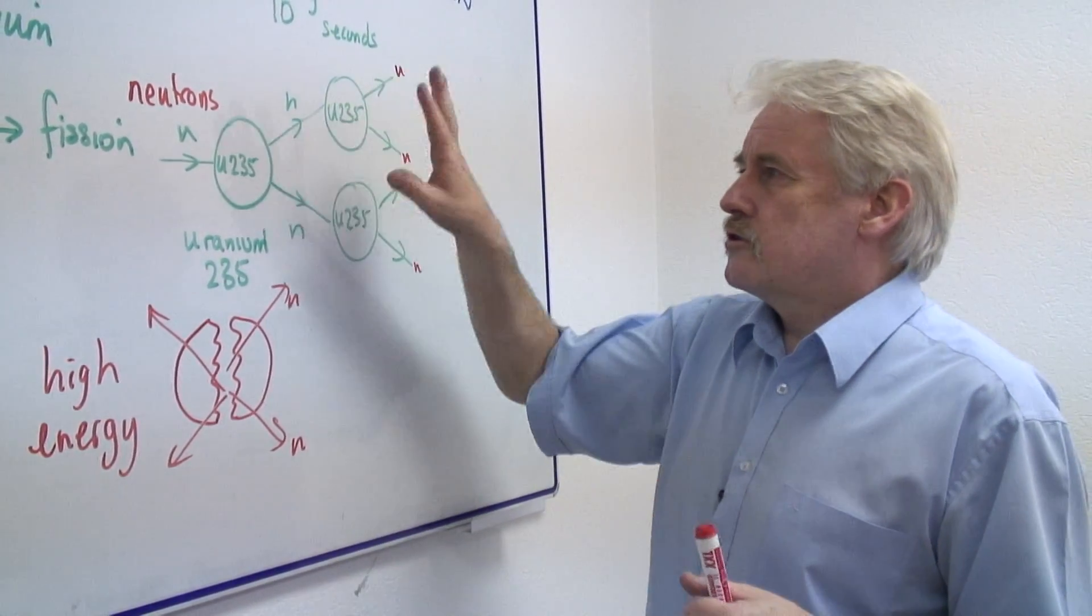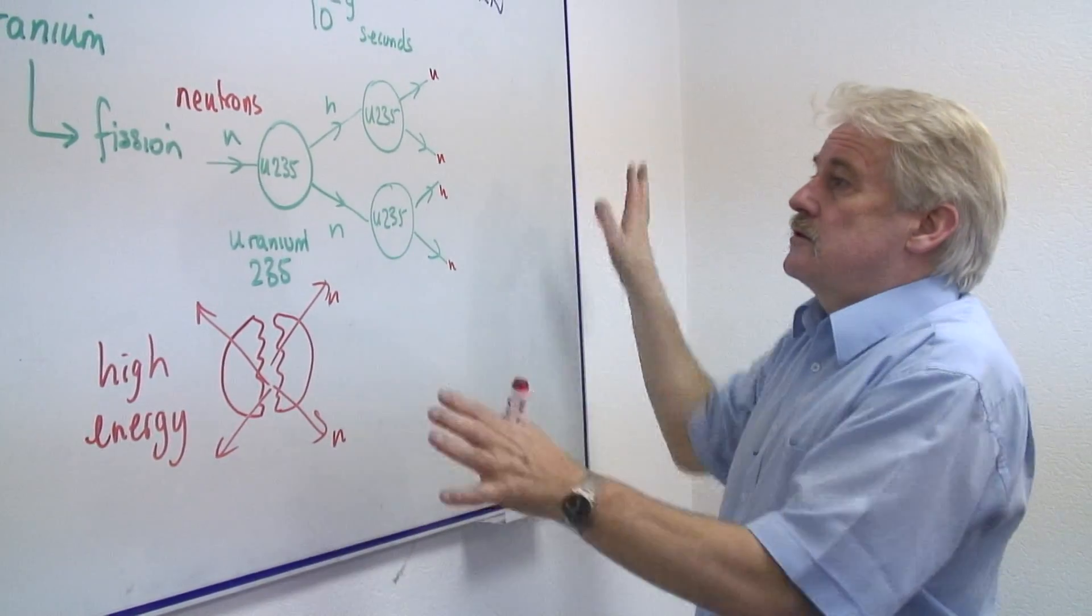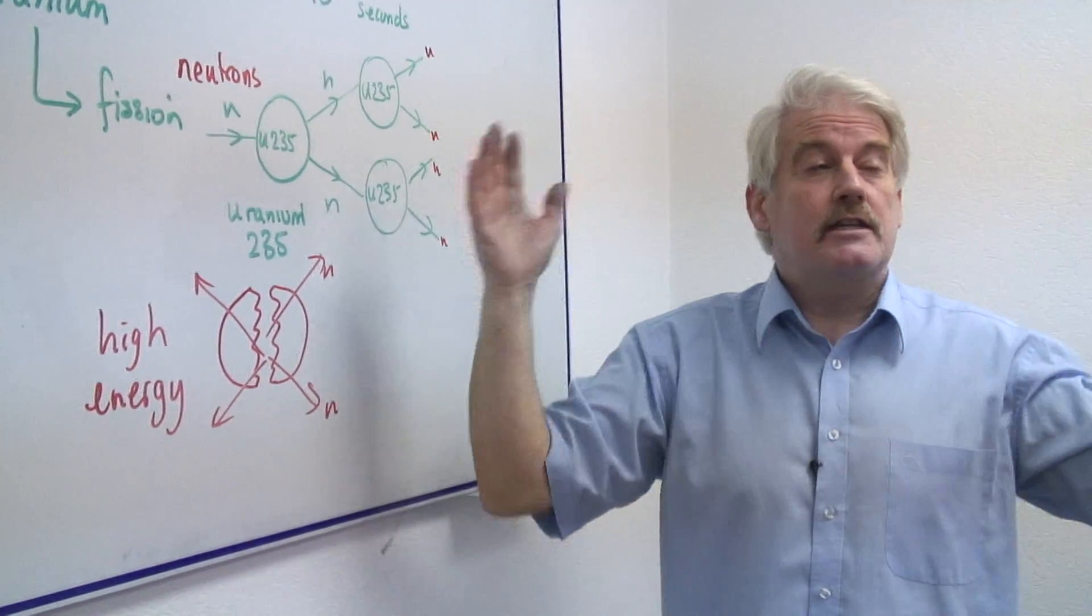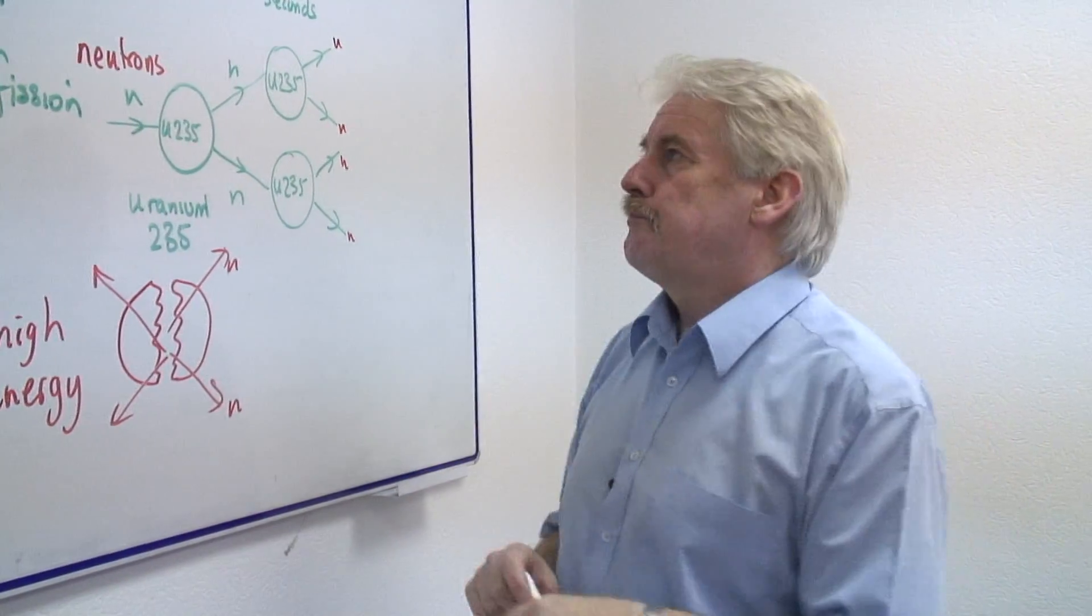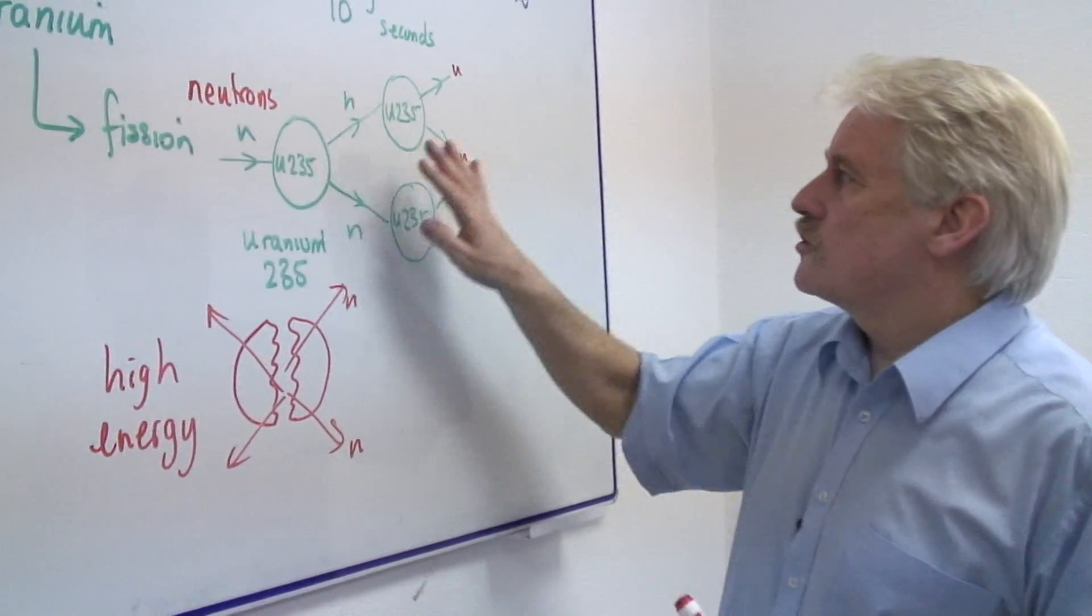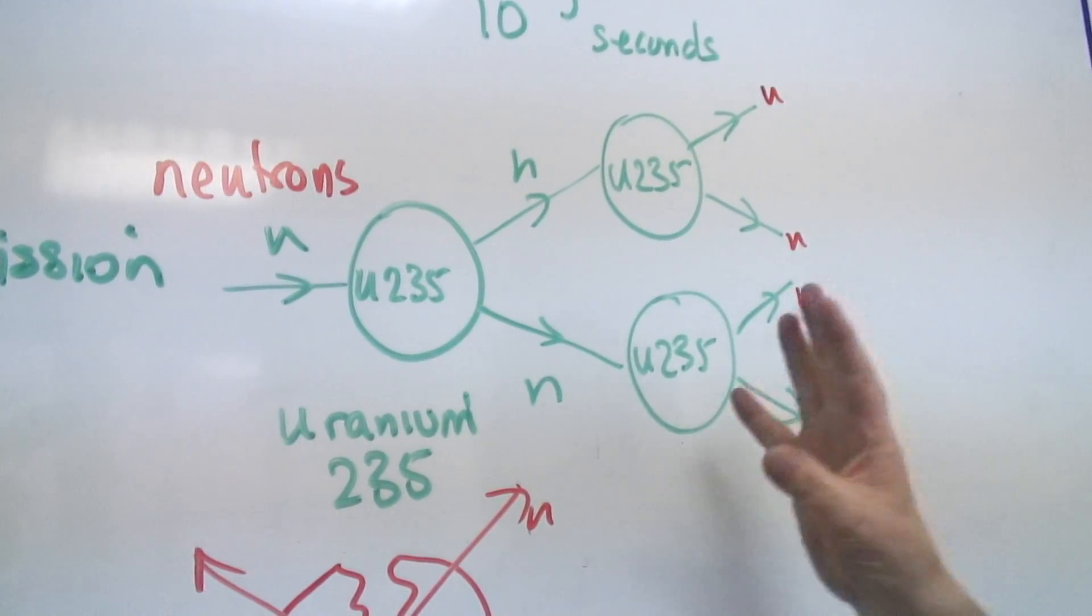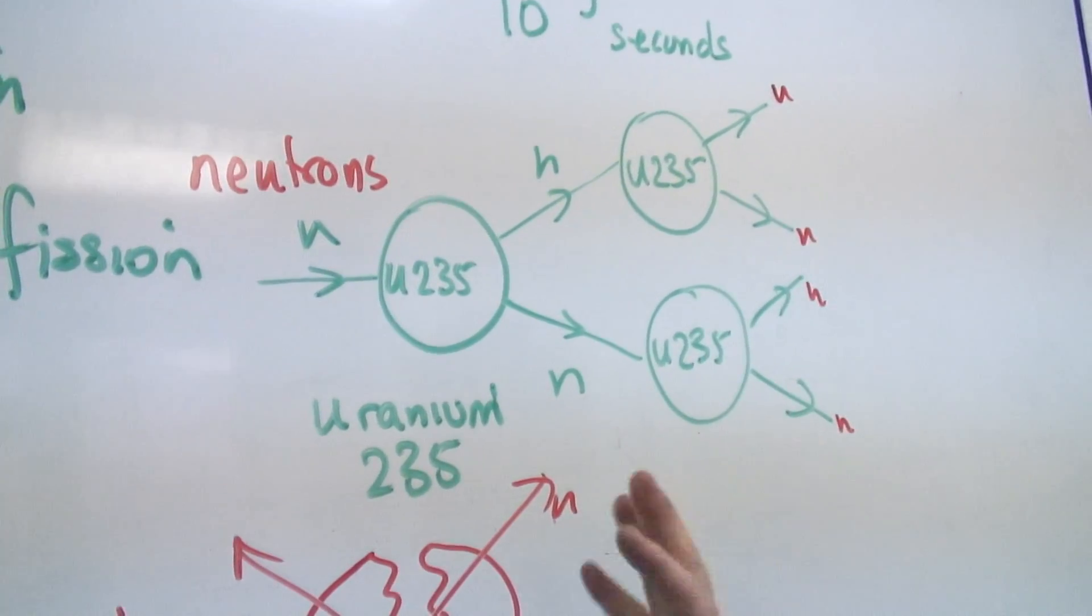To stop this happening, this would be the normal process. And normally most of these neutrons just disappear into the air and don't do any harm. However, if each of these neutrons produces yet another reaction, then we get an awful lot of energy produced at once and an awful lot of heat.